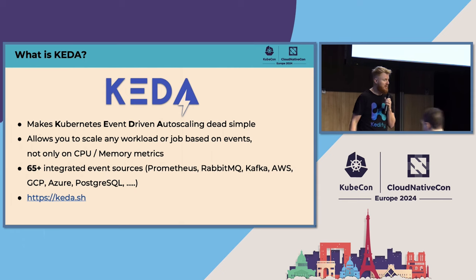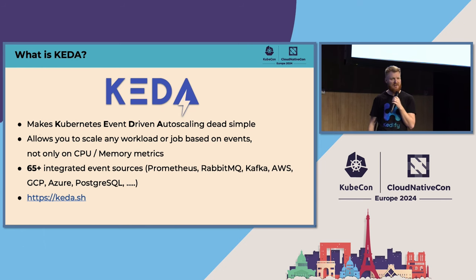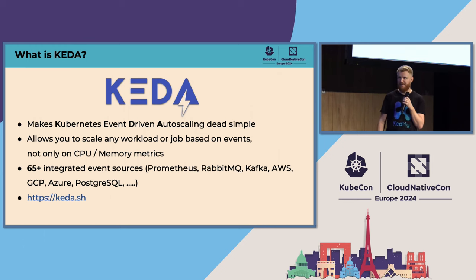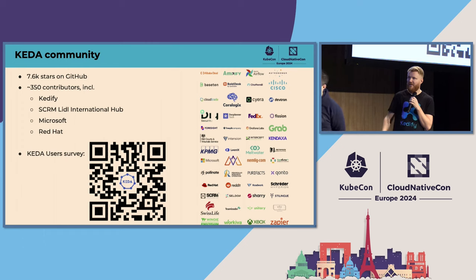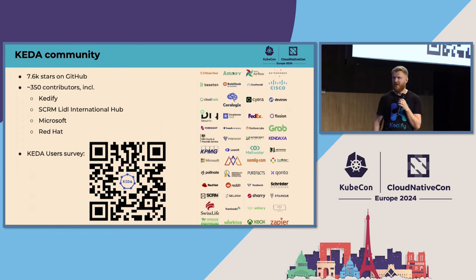KEDA is an event-driven autoscaler. We try to make it as simple as possible. We have 60-plus different connectors to services — AWS, Prometheus, Kafka, whatever. You can scale your workloads or schedule long-running jobs based on those metrics. We have a big community and a lot of users. There's a QR code for the KEDA user survey — we'll share it at the end of the presentation.